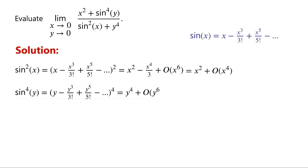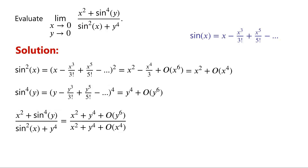Similarly, sine to the power of 4 of y equals y to the power of 4, plus big O of y to the power of 6. Then the given function can be written as x squared plus y to the power of 4, plus big O of y to the power of 6, over x squared plus y to the power of 4, plus big O of x to the power of 4.